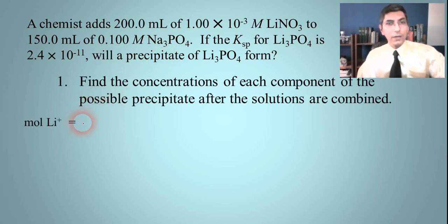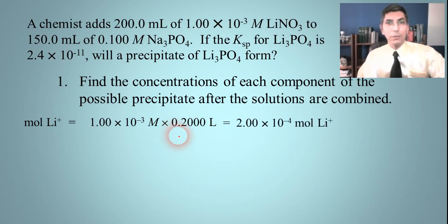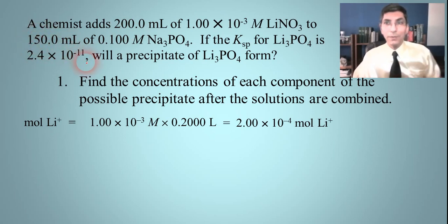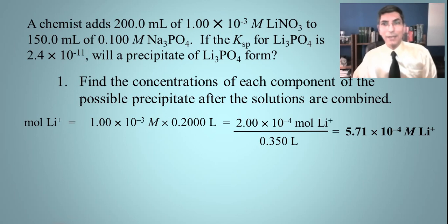Starting with lithium: moles of lithium equals 1 times 10 to the negative third molar times 0.2 liters, giving 2 times 10 to the negative fourth moles of lithium. To find molarity, we divide by the new total volume. The total volume is 200 milliliters plus 150 milliliters, which is 350 milliliters, or 0.350 liters. So the molarity of lithium is 2 times 10⁻⁴ divided by 0.350, which equals 5.71 times 10 to the negative fourth molar.